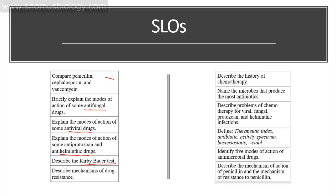We are going to describe the history of chemotherapy, name the microbes that produce antibiotics, and describe the problems of chemotherapy for viral, fungal, protozoal, and helminthic infections. We will also cover definitions like therapeutic index, antibiotic activity spectrum, bacteriostatic, bactericidal, and so on. We also want to talk about the five modes of action of antimicrobial drugs and describe the mechanism of action of penicillin and the mechanism of resistance against penicillin-type drugs.